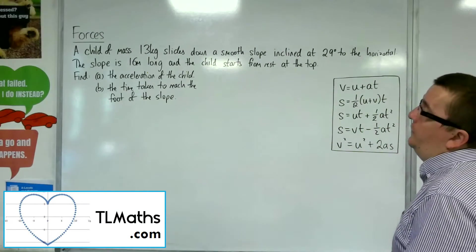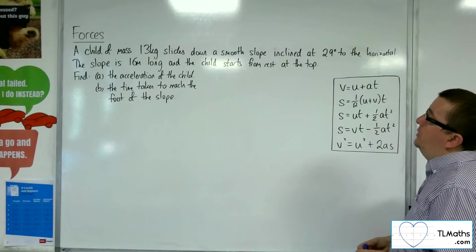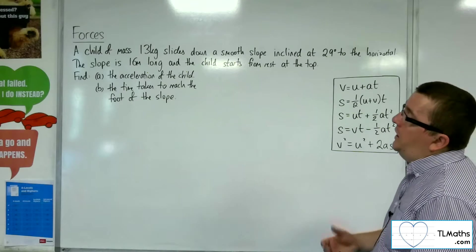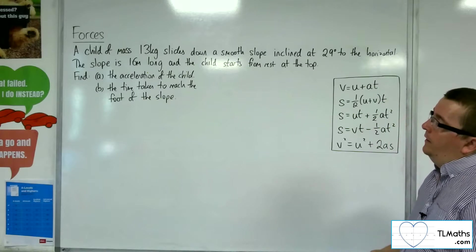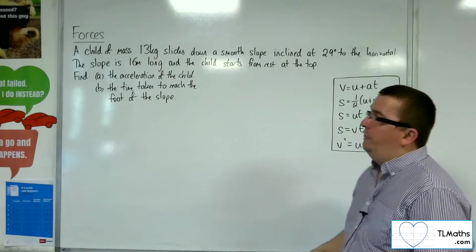Okay, in this video, a child of mass 13 kilos slides down a smooth slope inclined at 29 degrees to the horizontal. The slope is 16 meters long, and the child starts from rest at the top. Find, first of all, the acceleration of the child, and then the time taken to reach the foot of the slope.